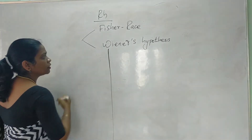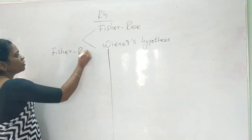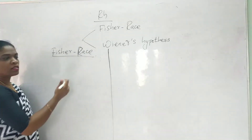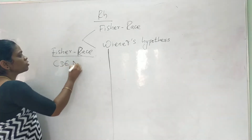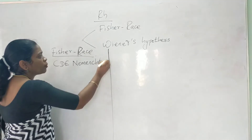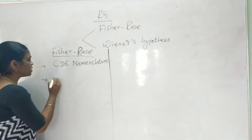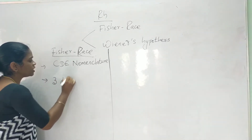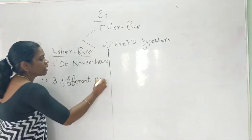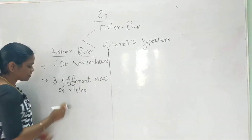Fischer and Reiss hypothesis was proposed by Fischer and Reiss. This hypothesis is also known as CDE nomenclature. This theory explains about the presence of three different pairs of alleles.